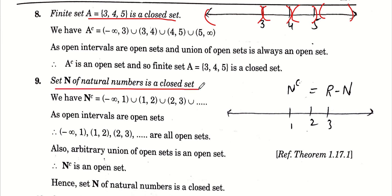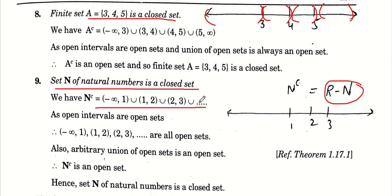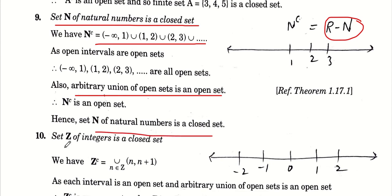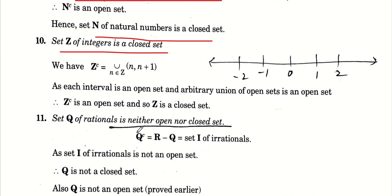बिल्कुल similar तरीके से set of natural numbers N आपका closed set prove हो जाएगा। N = {1, 2, 3, ...} का complement R-N को पहले prove किया था कि यह open set है। या आप complement को open intervals की union लिखकर prove कर सकते हैं। Arbitrary union of open sets open होता है, इसलिए complement open होगा और N closed होगा। Similar way में, आप Z को भी closed set prove कर सकते हैं।